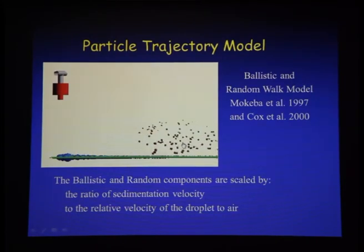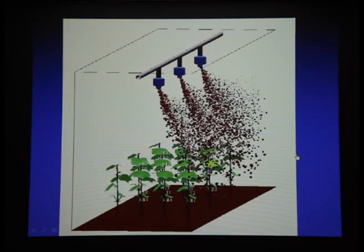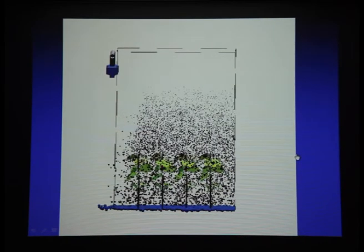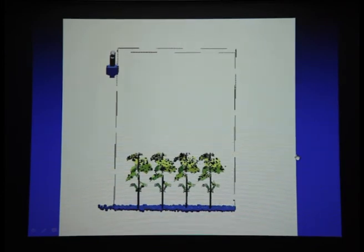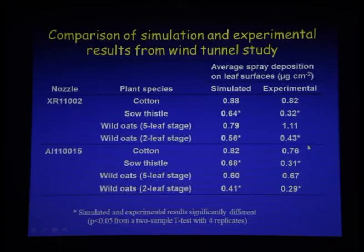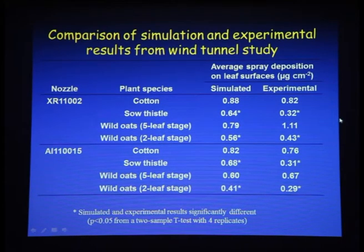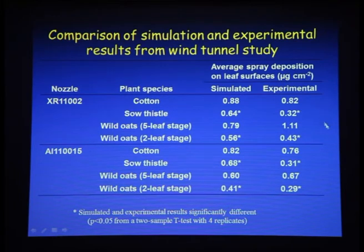The particle trajectory model is partly ballistic and partly a random walk. Ballistic in that droplets are sprayed at a certain speed, weight, and trajectory, with gravity accounted for. Random walk in that air influences where they go. Bigger particles are more ballistic and smaller particles are more of a random walk — those small ones cause off-target drift. We can then simulate this over a whole crop. For cotton we got a pretty good comparison between simulation and experiment, but for sow thistle the comparison was not very good — these were significantly different.